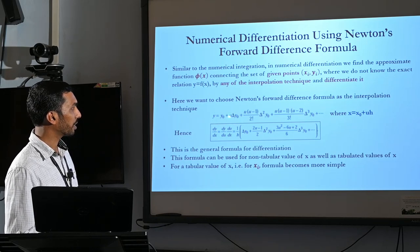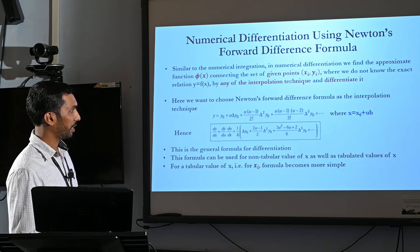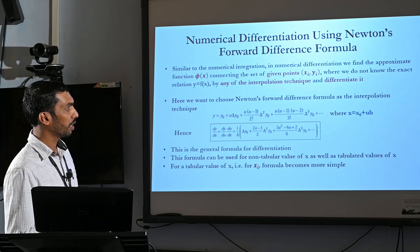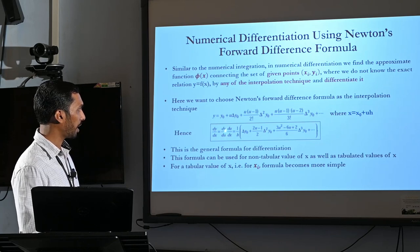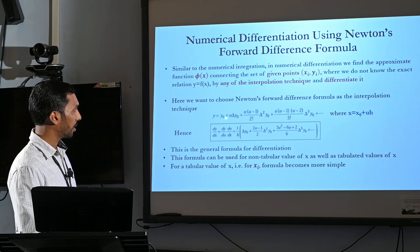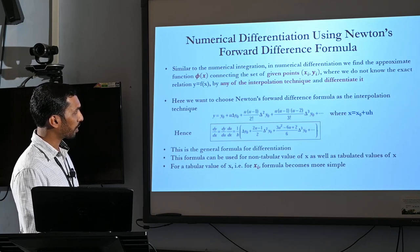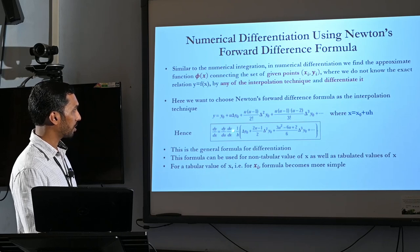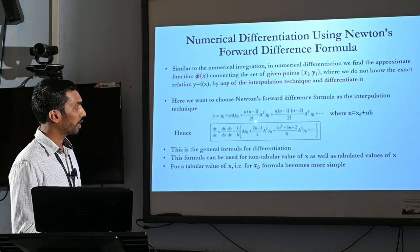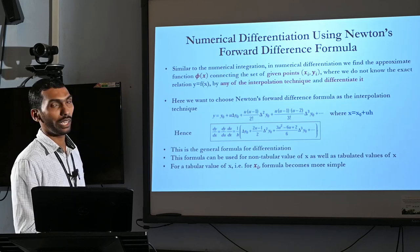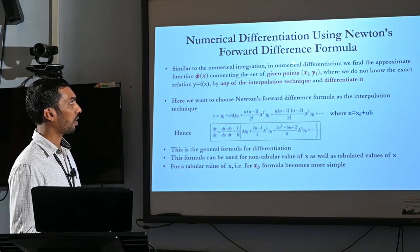Since y is an explicit function of u, we rewrite accordingly. We know that du/dx equals 1/h from the equation x equals x0 plus u*h. Therefore dy/dx equals dy/du times 1/h. Differentiating y with respect to u: the derivative of y0 is zero, giving delta y0 for the first term, then (u squared minus 1) by 2 factorial differentiated, and so on. The final result is: dy/dx equals 1/h times [delta y0 plus (2u minus 1)/2 times delta square y0 plus ...], up to the nth term. This is the general formula for Numerical Differentiation using Newton's Forward Difference Formula.